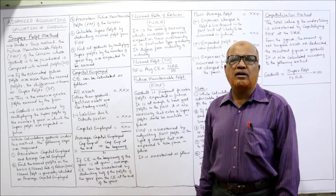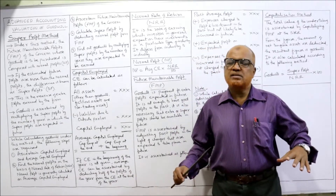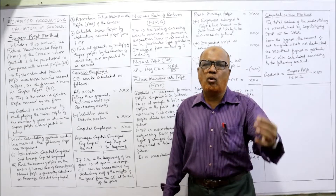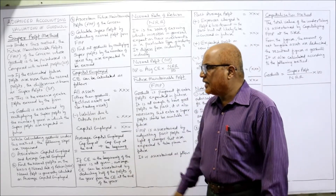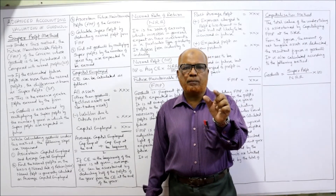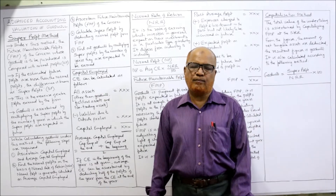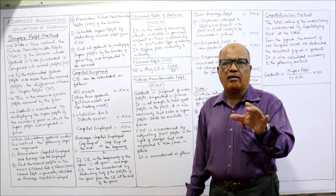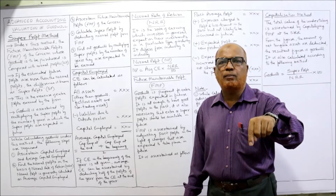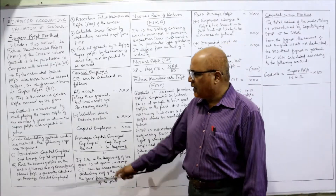Super profit is the measure of extra profit earned by the firm. A business will have goodwill only when it has super profit. If a business does not have super profit, there is no goodwill. Goodwill arises whenever the future expected profit is more than the normal profit. Goodwill is ascertained by multiplying super profit by the number of years in which the super profits are expected in the future. So: Goodwill = Super Profit × Number of Years of Purchase.